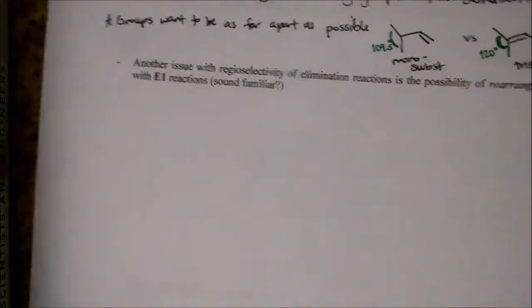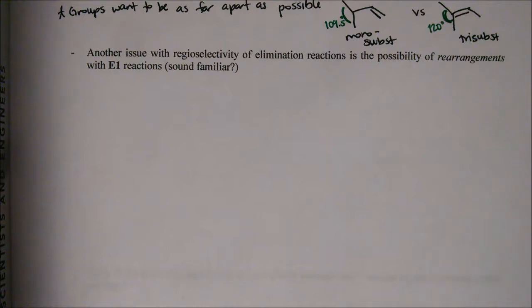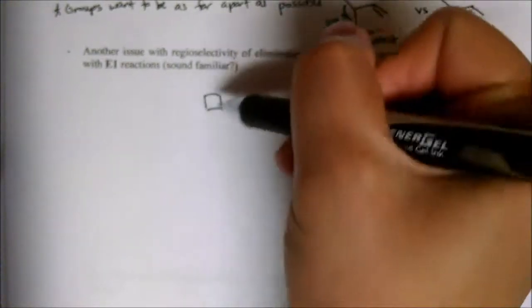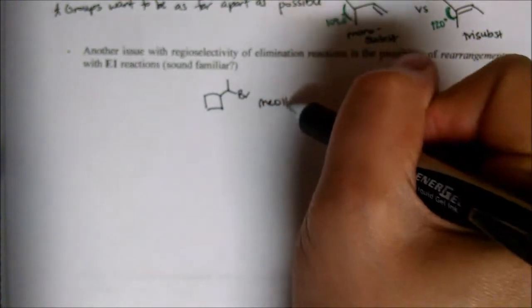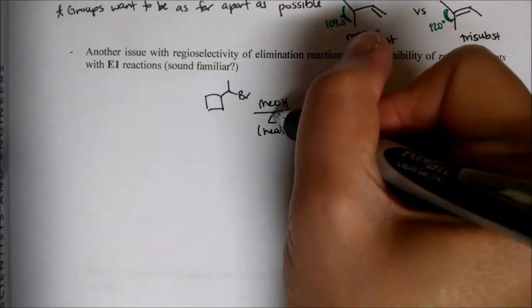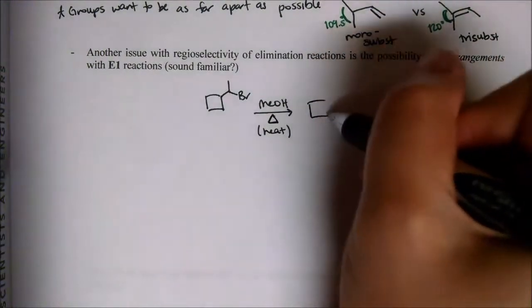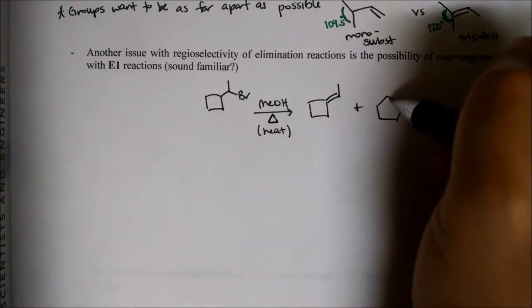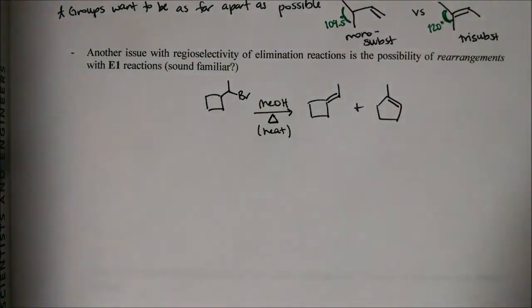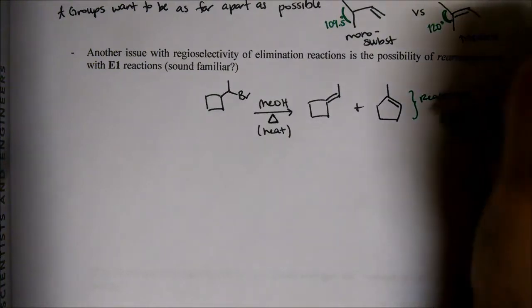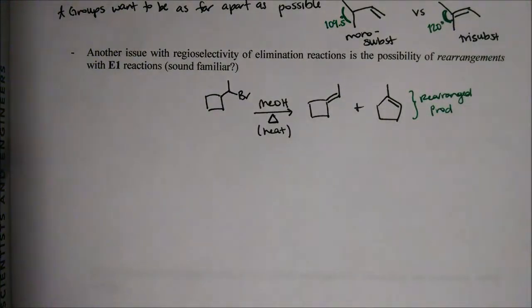Another issue with regioselectivity is that of rearrangements. This should sound familiar, because we go through the same carbocation intermediate as the SN1, which is also where we see rearrangements. Let's take this reaction in methanol with heat - we actually get two different products. We get the expected product, but we also get a rearranged product.